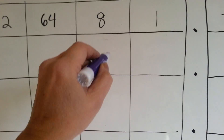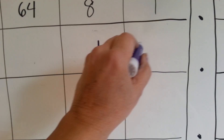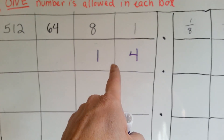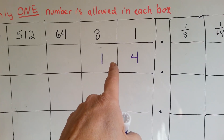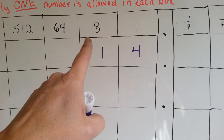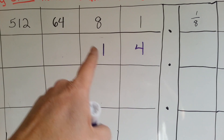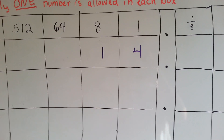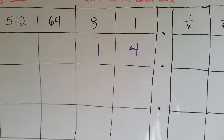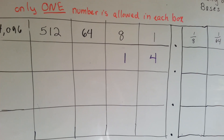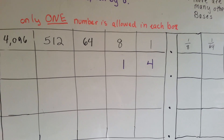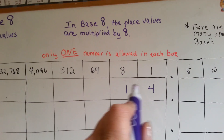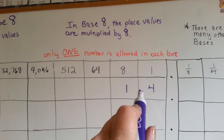If I said that you've got this number in base eight, it means you have one eight and four ones. One eight and four ones would be twelve in our base ten place value system. But in base eight, it would be written as a one and a four.